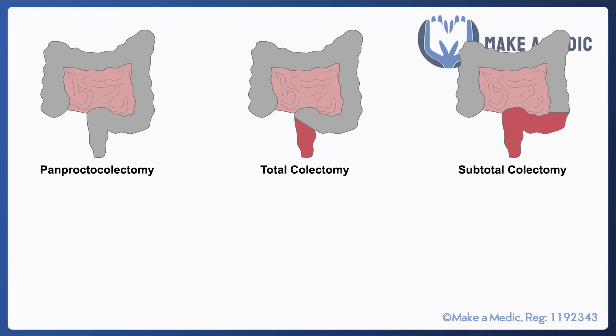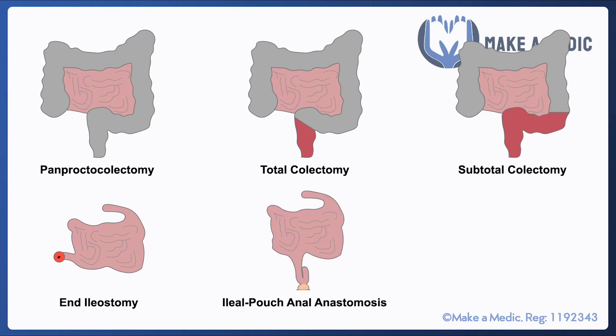Given that these patients have had most of their large bowel removed, we need to consider what they will be left with. In the case of a pan proctocolectomy, they will likely be left with an end ileostomy, which means that whichever loose end of the ileum is remaining will be brought up to the skin.